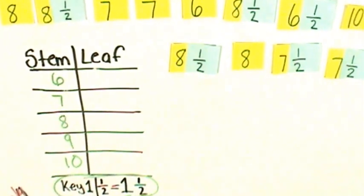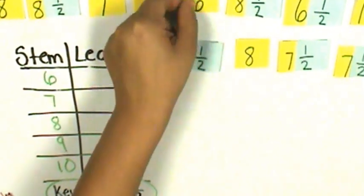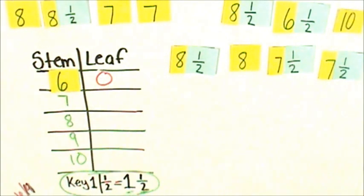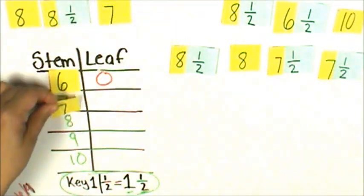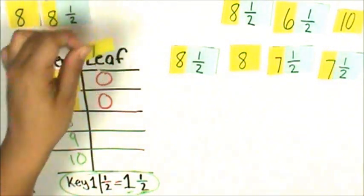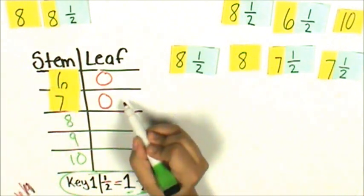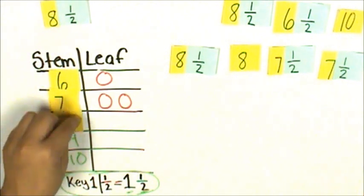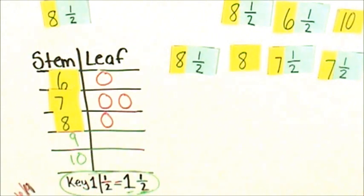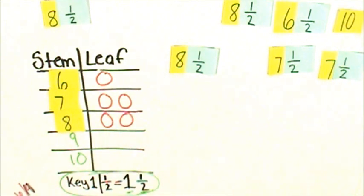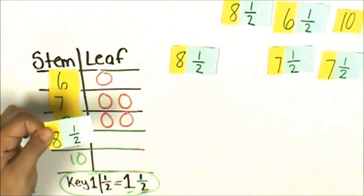Now let's complete our stem and leaf plot. 6 is our stem. The leaf is 0 because it was a whole shoe size and didn't have a fraction. Our next stem is 7. It doesn't have a fraction. The leaf is 0. We have another 7. The leaf is 0. We have 8 as our stem. The leaf is 0. We have another 8 as the stem. The leaf is 0. This one is 8 and 1 half. 8 is our stem. Half is our leaf.